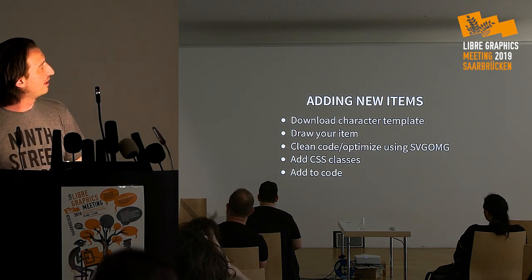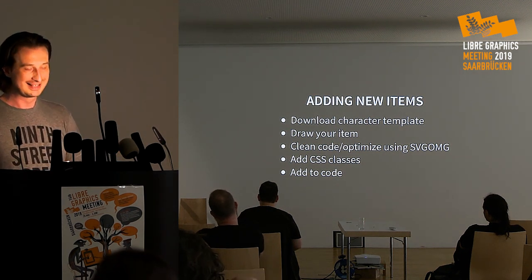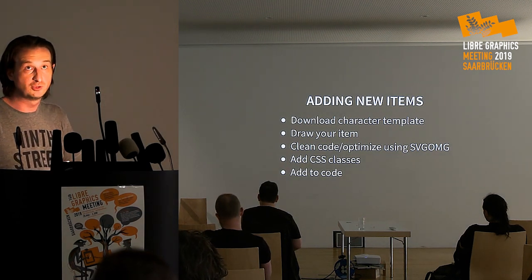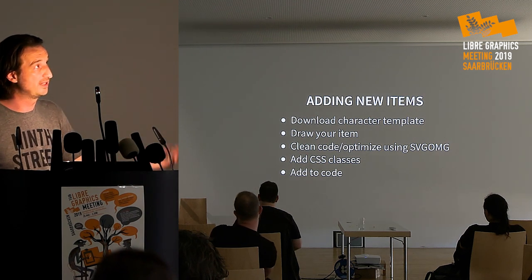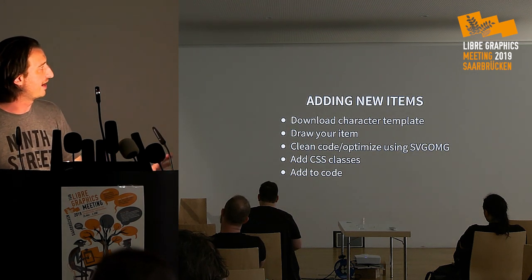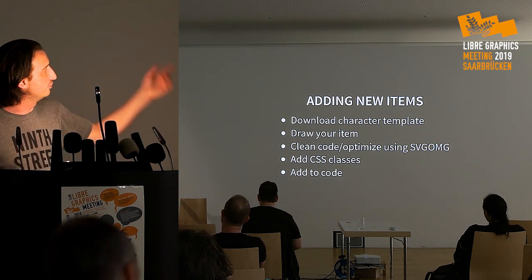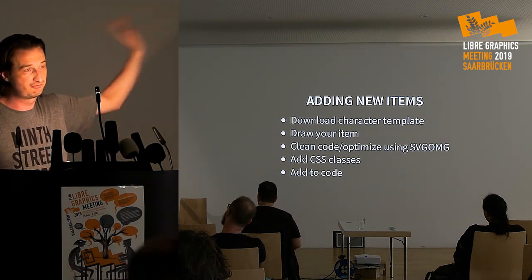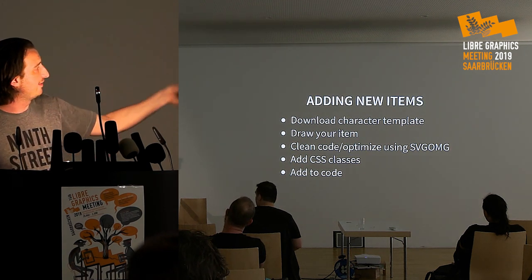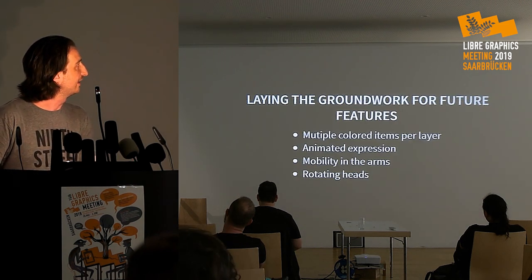Adding new items is still a bit hard — I'm the only one adding items at the moment. I got an email asking how to do it, so I'll write a how-to. You need to get into the code: download a character template, draw the item, add the CSS classes and colors, then inject it. I'm looking forward to automating this so artists won't have to open an intimidating code base.